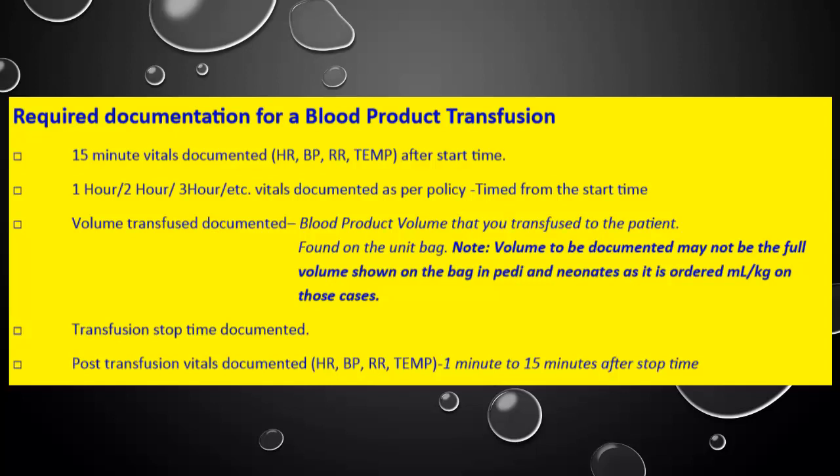There are specific requirements that the hospital requires for documenting a blood product transfusion. Number one is 15-minute vital signs documented — it has to at least be heart rate, blood pressure, respiratory rate, and temperature, and it has to be 15 minutes after the start time. There should be one, two, three hour vital signs documented as per policy, timed from the start time. Volume transfused must be documented — the blood product volume transfused to the patient, found on the unit bag. Note that volume documented may not be the full volume shown on the bag in pediatric and neonatal cases, as it is ordered in milliliters per kilogram. You must document a transfusion stop time. There also must be post-transfusion vitals — at least heart rate, blood pressure, respiratory rate, and temperature — documented one to 15 minutes after the stop time.